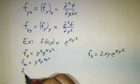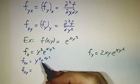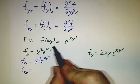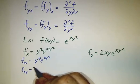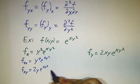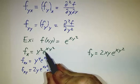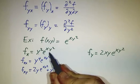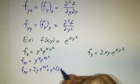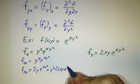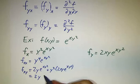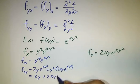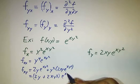If we want to figure out f_xy, we take the derivative of f_x with respect to y. For that we use the product rule. We get 2y times e to the xy squared, plus y squared times the derivative of e to the xy squared. We already figured out that derivative was 2xy e to the xy squared. So that comes out to be (2y + 2xy³) e to the xy squared.